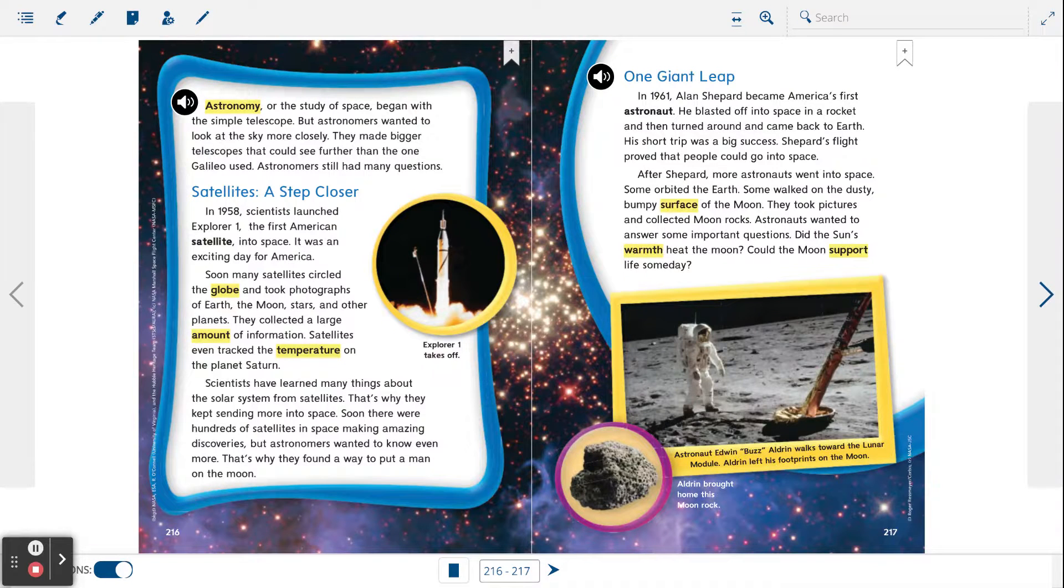After Shepard, more astronauts went into space. Some orbited the Earth. Some walked on the dusty, bumpy surface of the moon. They took pictures and collected moon rocks. Astronauts wanted to answer some important questions. Did the sun's warmth heat the moon? Could the moon support life someday?